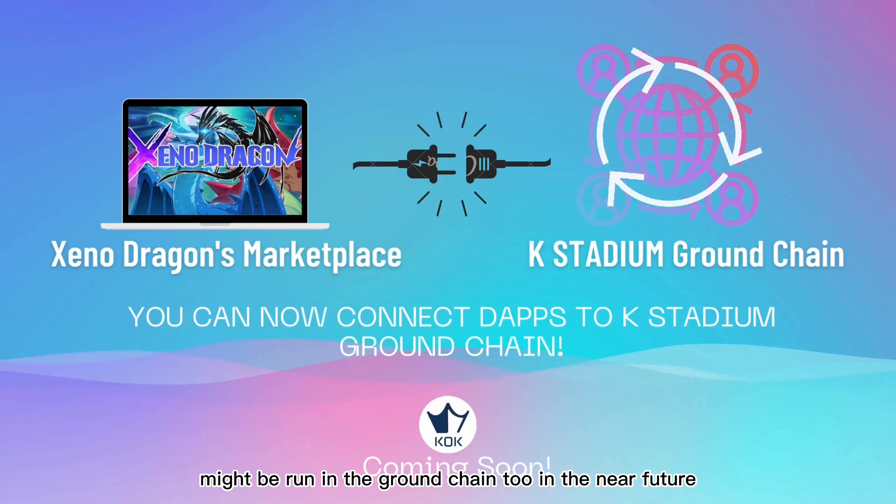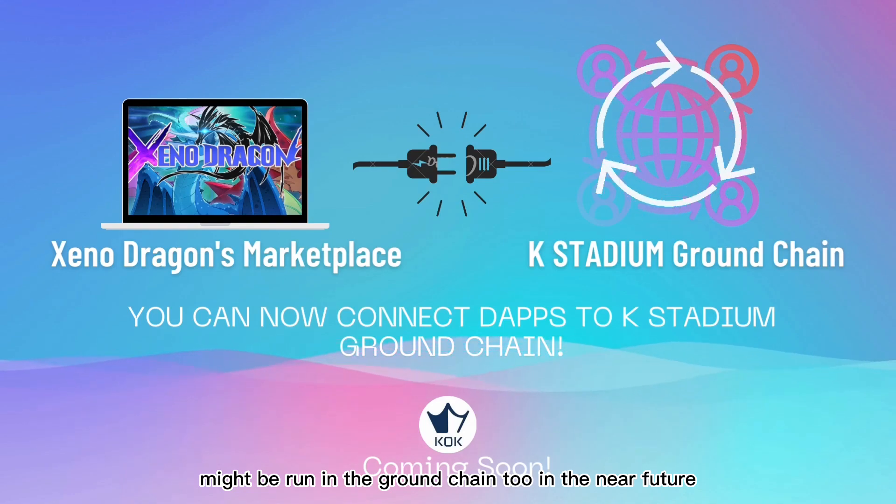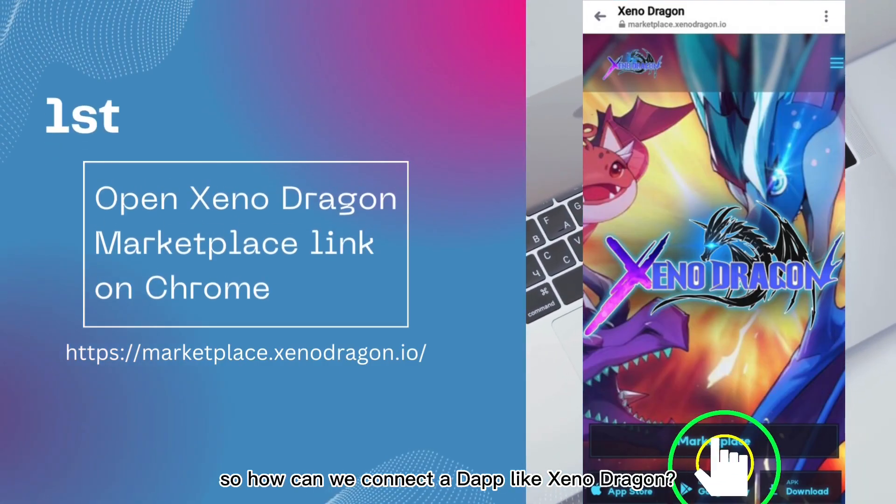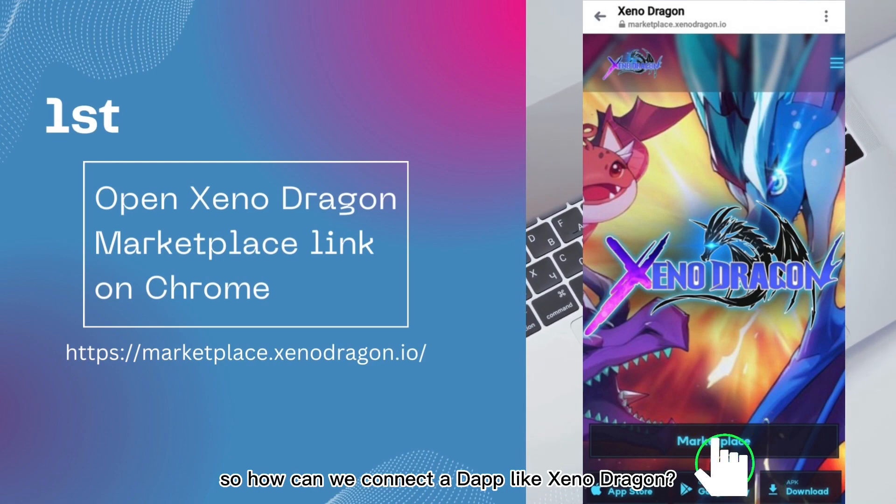What more can we expect? The K-OK Play app, as a dApp, might be run on the Ground Chain too in the near future. So how can we connect a dApp like XenoDragon?